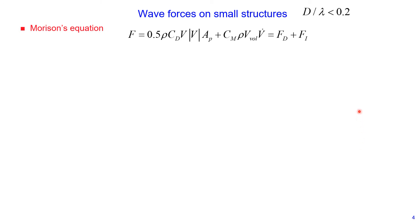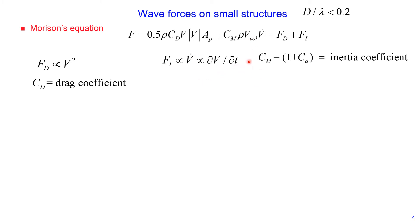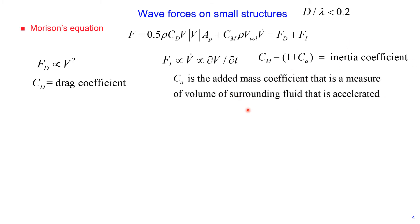To determine the total wave-induced force on a small structure, we need to estimate the drag force and inertia force. The drag force depends on velocity squared, so we need to determine velocity, and also depends on drag coefficient CD. Inertia force is proportional to acceleration V-dot (DV/DT), and also depends on inertia coefficient CM. The inertia coefficient depends on the added mass coefficient, which is a measure of the volume of surrounding fluid that is accelerated.